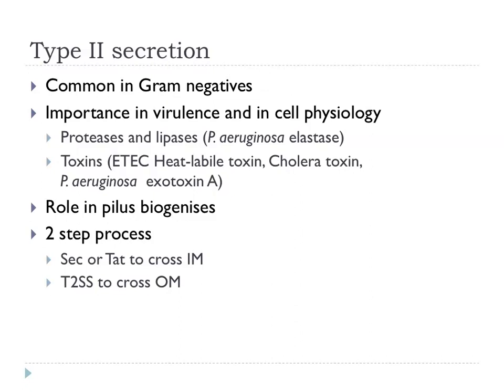Now to quickly consider type 2 secretion. This is quite common in gram-negatives and has important roles in virulence and physiology. All sorts of enzymes are secreted this way — Pseudomonas aeruginosa in the cystic fibrosis lung secretes elastase using this mechanism. Many toxins go out this way; we already mentioned ETEC and the heat-labile LT toxin, and cholera toxin is also secreted this way. This is a two-step process: Sec or TAT pathways get stuff over the inner membrane, then type 2 secretion gets things across the outer membrane.